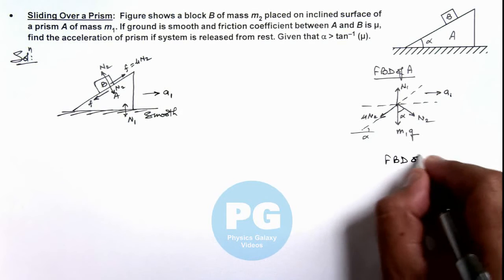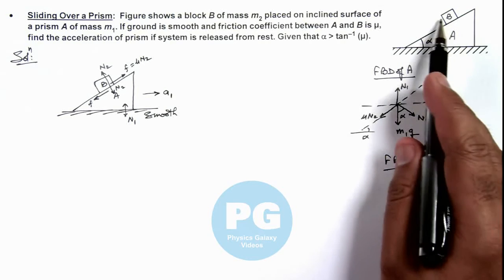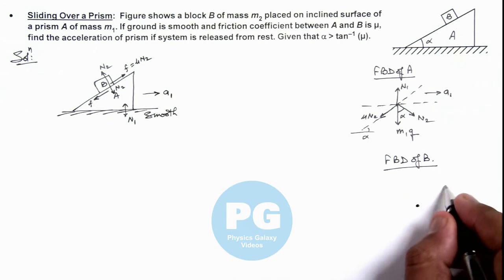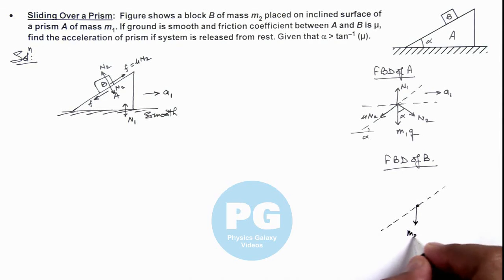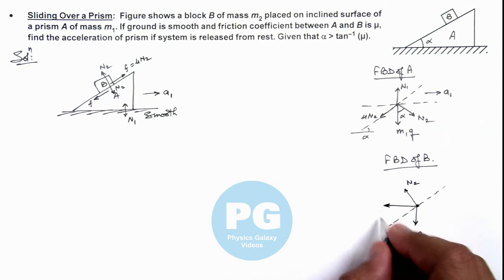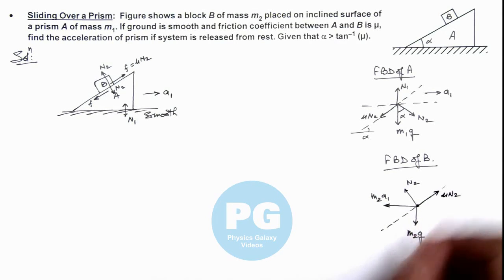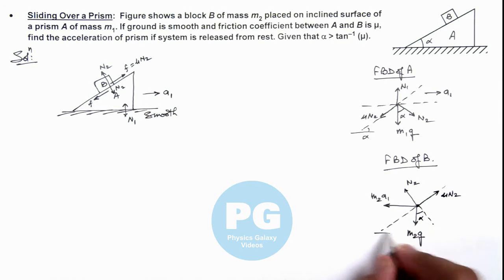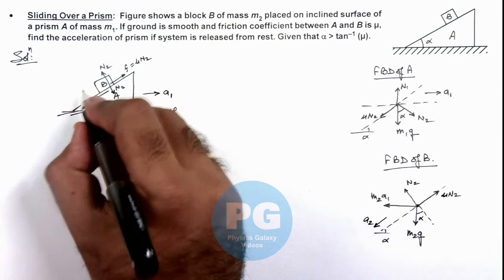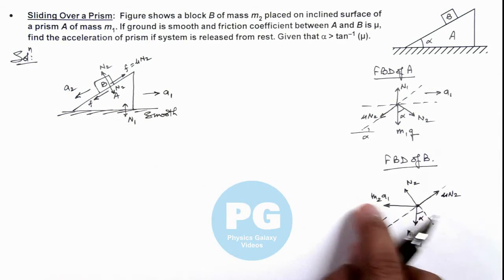Similarly, we draw the free body diagram of block B resting on prism A. Since it is on an accelerating incline, it is better to solve it in the non-inertial reference frame by considering a pseudo force on it. Block B experiences its weight m2g, normal reaction N2 perpendicular to the surface, and since the prism is accelerating to the right with acceleration a1, it experiences a pseudo force m2·a1. As it is sliding down, friction μN2 acts up the incline. The angle is α, and we consider the motion of block B with respect to the prism with acceleration a2.